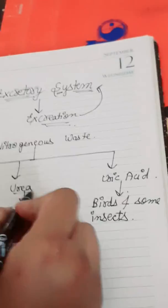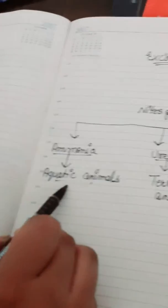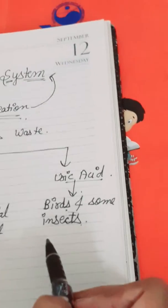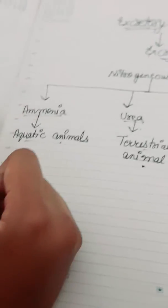These are the different kinds of waste generated by different kinds of animals — aquatic animals which live in water, terrestrial animals which live on land, and birds which live in the sky. Now let's move to the structure of the urinary or excretory system.